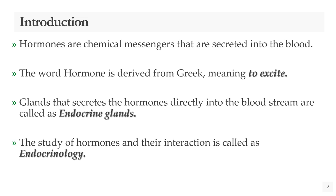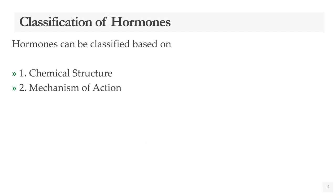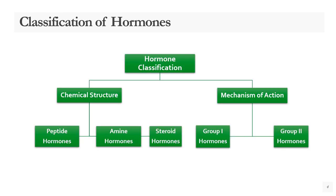Hormones can be classified based on their chemical structure and their mechanism of action. Based on chemical structure, they can be subdivided into three types: peptide hormones, amino acid derivatives (also called amine hormones), and steroid hormones.